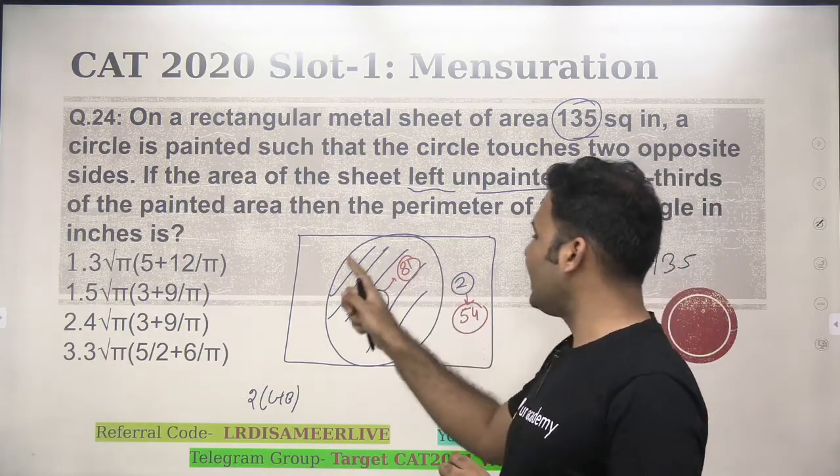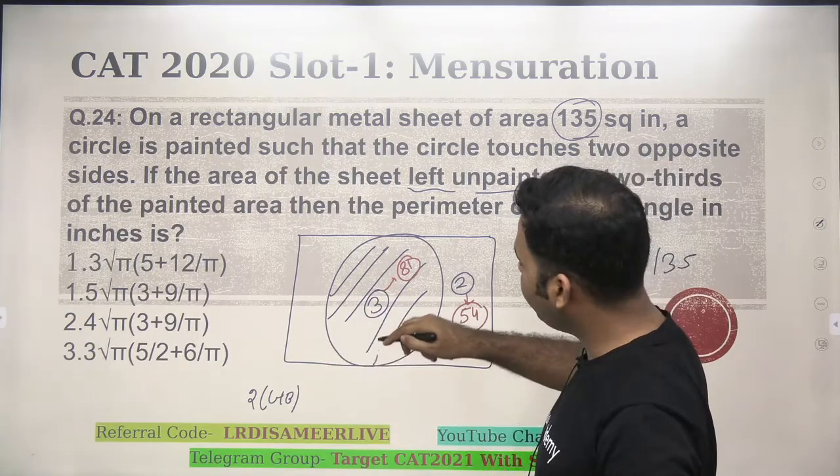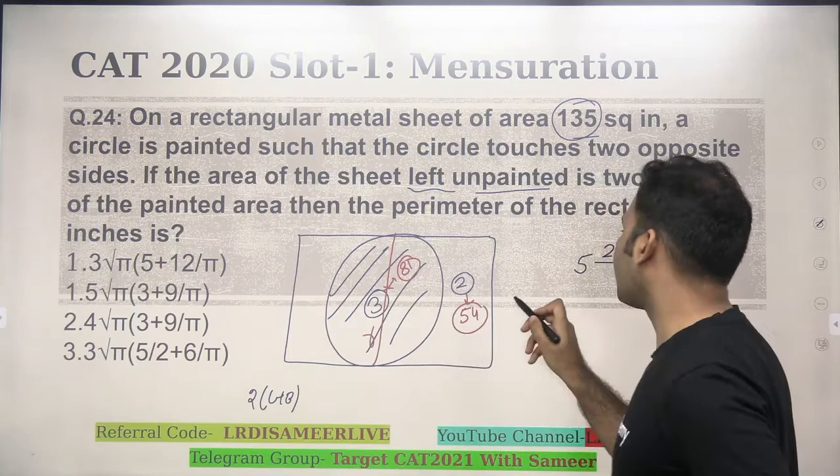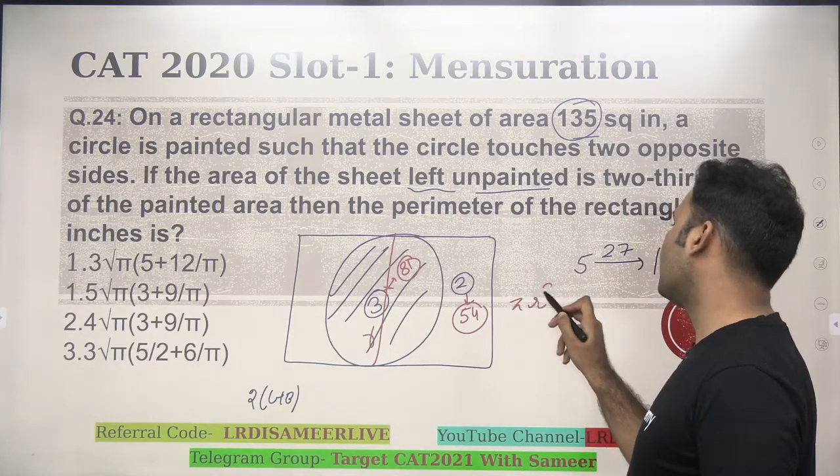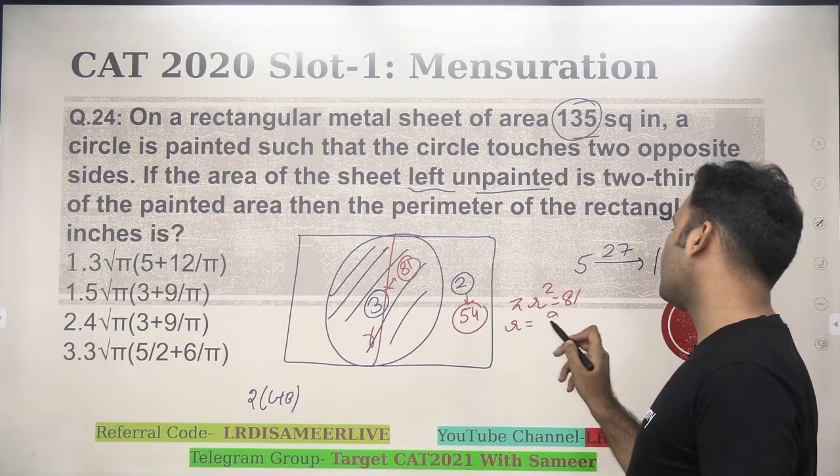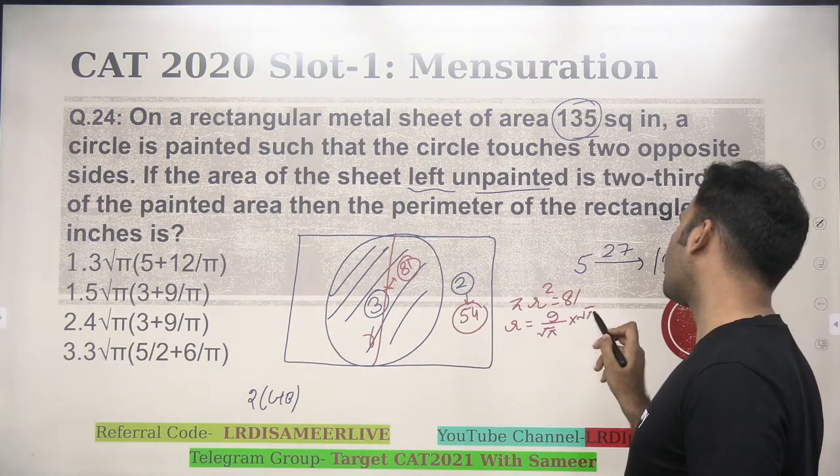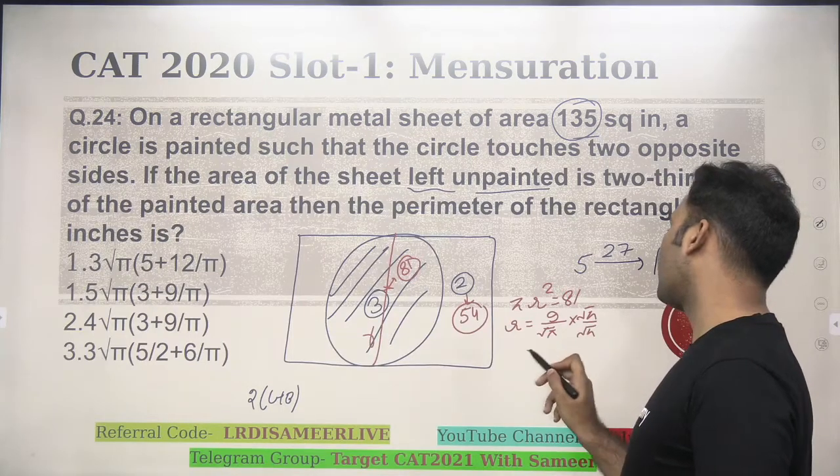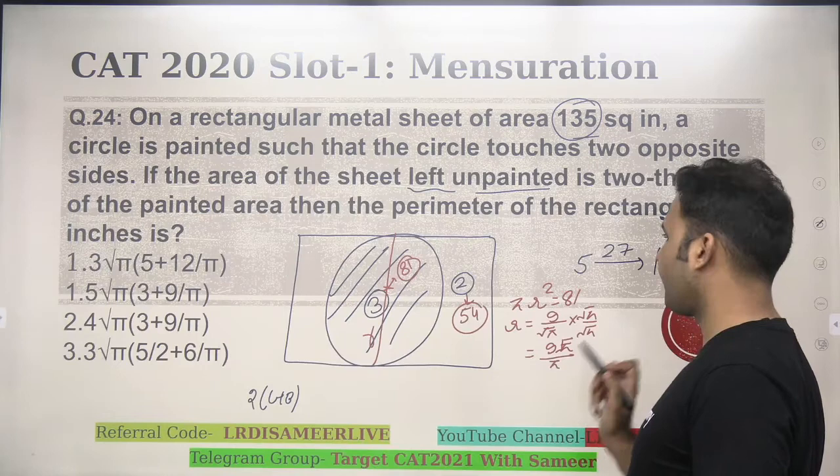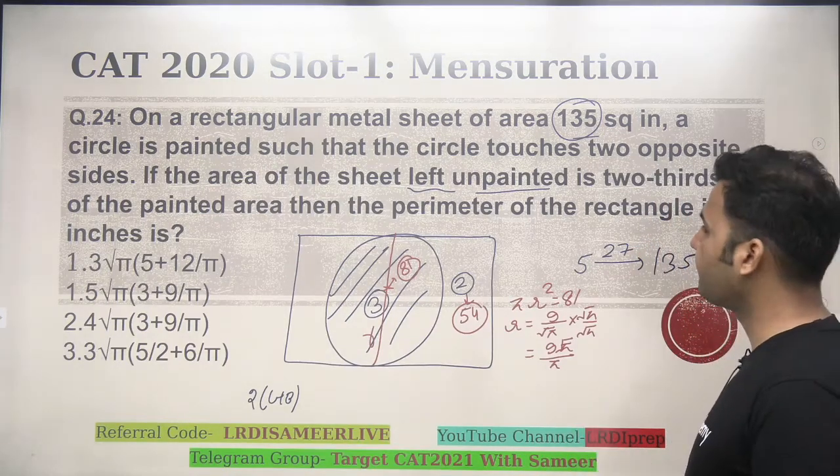Now, if the area of this whole circle is 81, and if I draw this diameter, and let's say this is the radius r, can I say pi r square will be equal to 81, so r will be equal to 9 upon root pi, which on rationalization, you can write it down as 9 root pi upon pi.